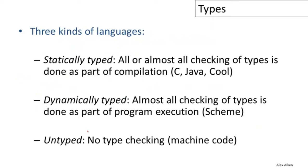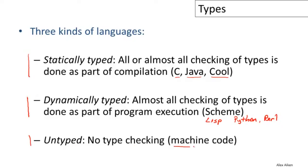Programming languages fall into three categories with respect to types. Statically typed languages do all or almost all type checking at compile time — Cool, C, and Java are examples. Dynamically typed languages do almost all type checking at runtime — the Lisp family, Python, and Perl are examples. And untyped languages do no type checking at all, at compile time or runtime — this is essentially what machine code does.